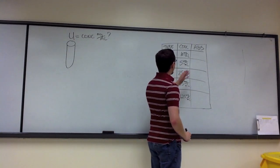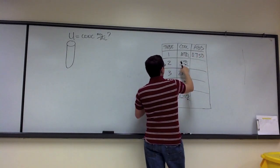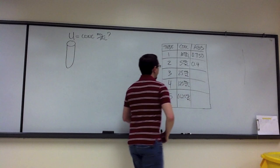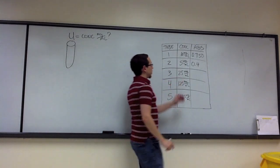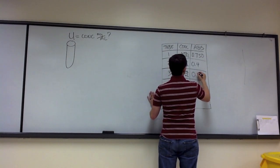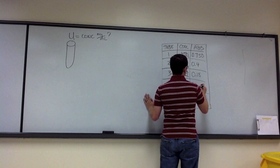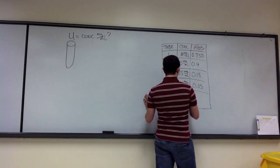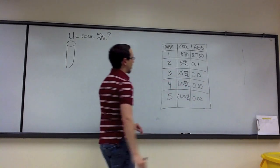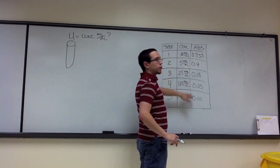For 10 milligrams per milliliter, we got an absorbance of 0.75. For 5 milligrams per milliliter, an absorbance of 0.4. For 2.5 milligrams per milliliter, an absorbance of 0.18. For 1.25 milligrams per milliliter, an absorbance of 0.05. And for 0.625 milligrams per milliliter, an absorbance of 0.02. So here are my values — I got these absorbances and these concentrations from my serial dilution.